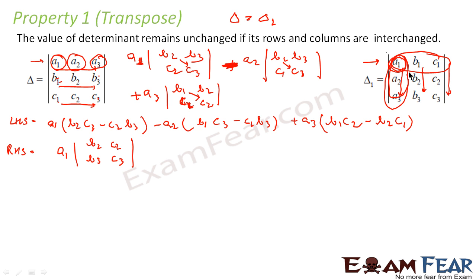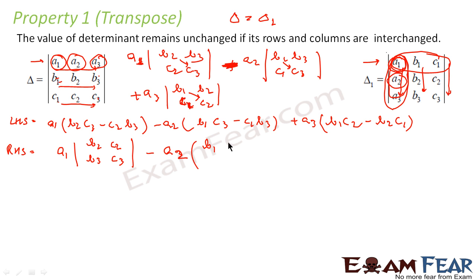Now take a2. This element is position (2,1), so minus one to the power 2+1 gives a negative sign — so it becomes minus a2. Removing its column and row, you are left with b1, c1, b3, c3, giving the minor determinant with b1, c1, b3, c3.